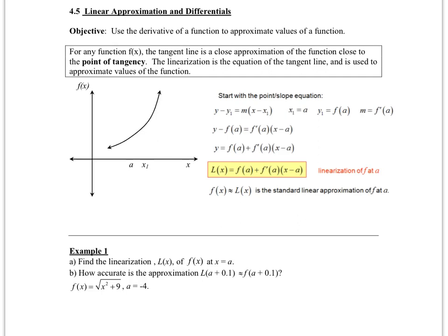If you take a look at the point-slope formula for the equation of a line — this is what you did in algebra — y minus a specific y value is going to equal the slope times x minus a specific x value. On this particular graph, we are looking at the location a comma f of a. So x₁ is a, because that's our x location, and our y value is f of a. Instead of writing m for slope, since we are in calculus, we write f prime of a — the derivative at that point — which gives you the slope at that one specific location.